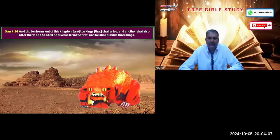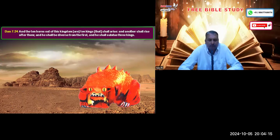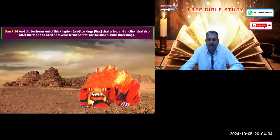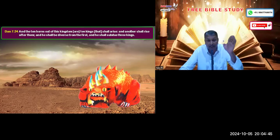Daniel himself gives the explanation of the horns in verse 24: 'The ten horns out of this kingdom are ten kings that shall arise, and another shall rise after them; and he shall be diverse from the first, and he shall subdue three kings.' The Bible is its own dictionary — the ten horns represent ten kings, ten kingdoms. Even today the European continent is represented by ten different countries.